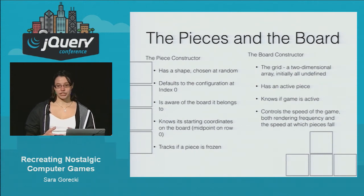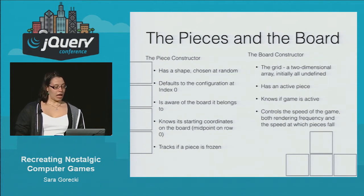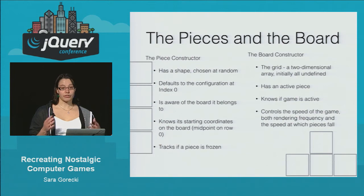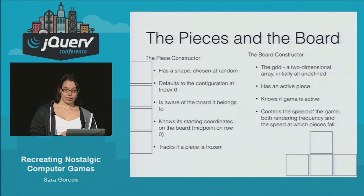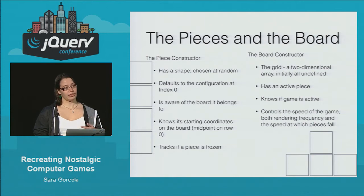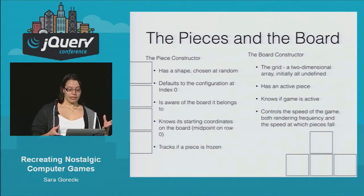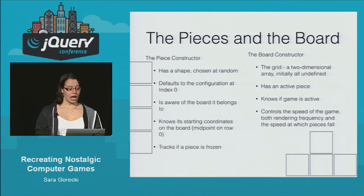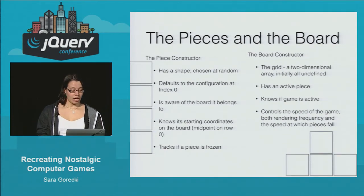I decided to make piece and board objects. The pieces have a shape chosen at random, they know the different configurations they can have, they're aware of the board they belong to, they know where they are on the board, and they know whether they're active or stuck at the bottom. The board is a grid; it has an active piece, it knows whether the game is active or paused, and the board is what controls the speed of the game and the rendering.